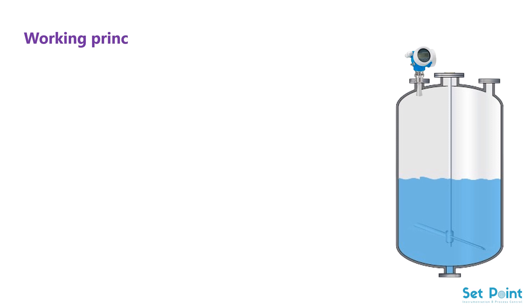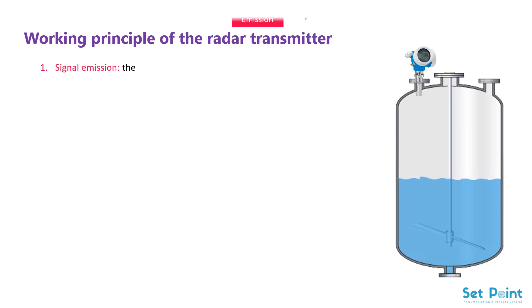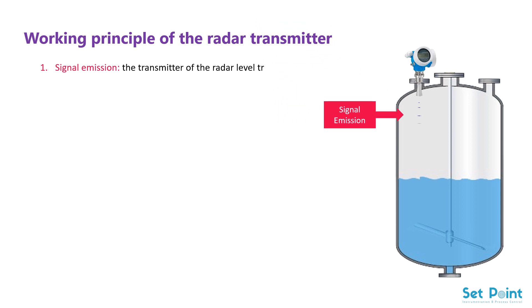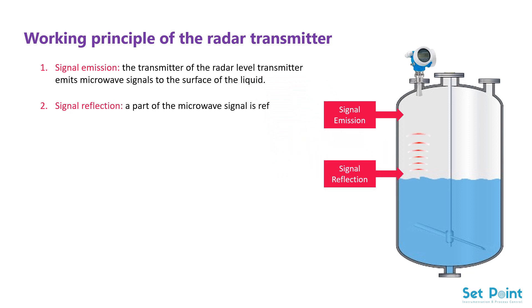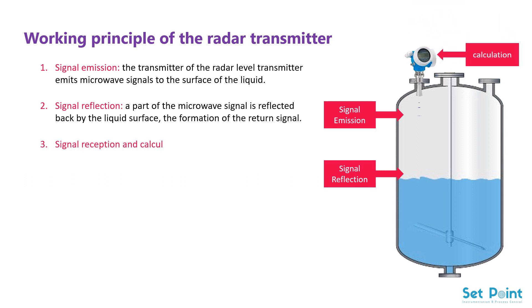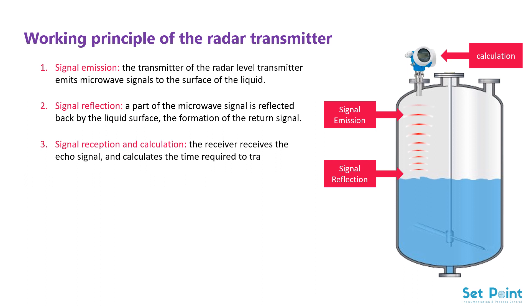Working principle of the radar transmitter. Signal emission: the transmitter emits microwave signals to the surface of the liquid. Signal reflection: a part of the microwave signal is reflected back by the liquid surface, forming a return signal. Signal reception and calculation: the receiver receives the echo signal and calculates the time required for the signal to travel and return.